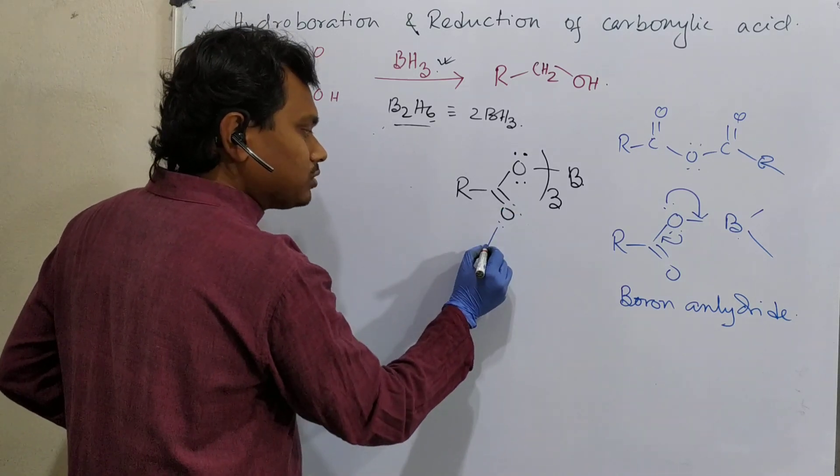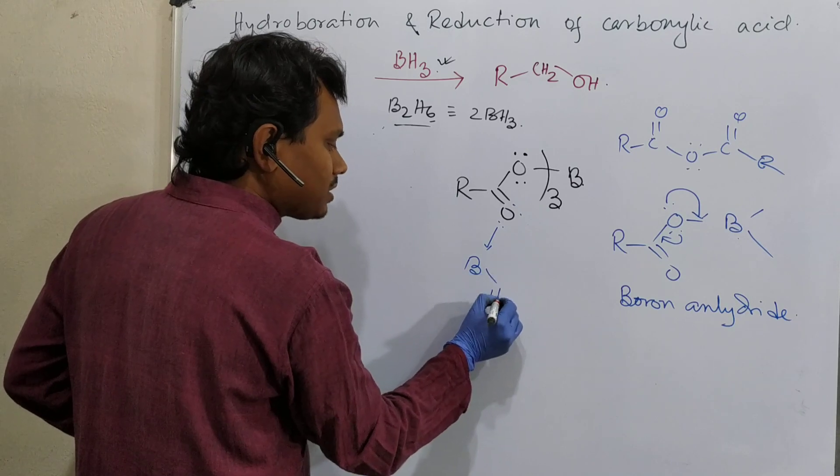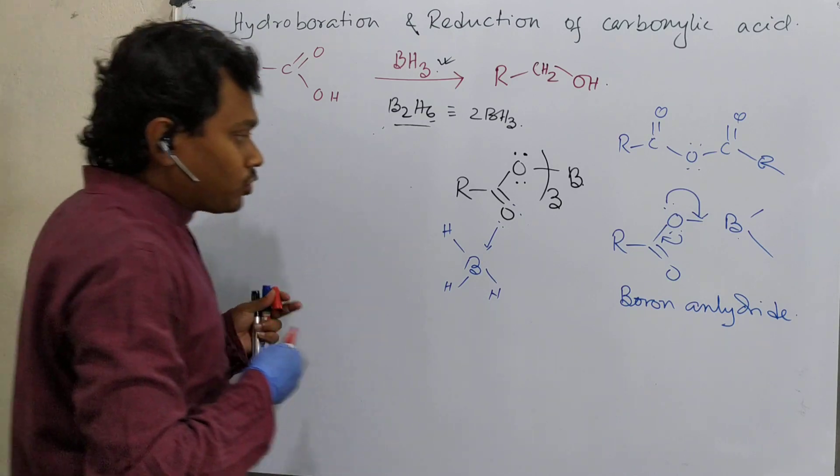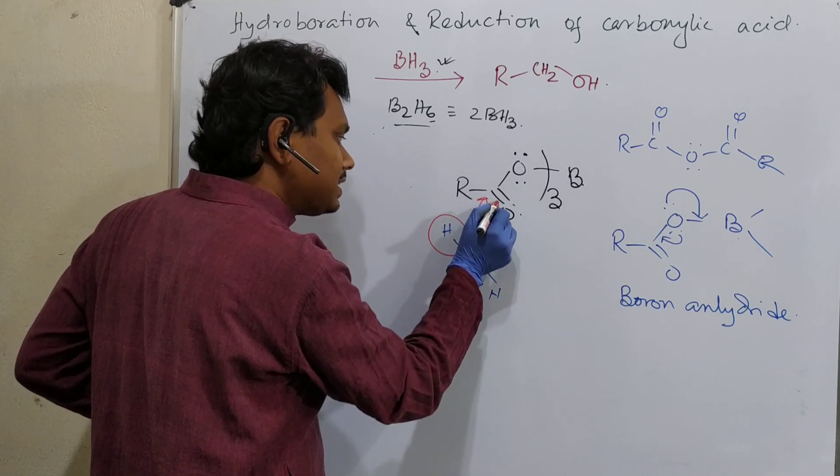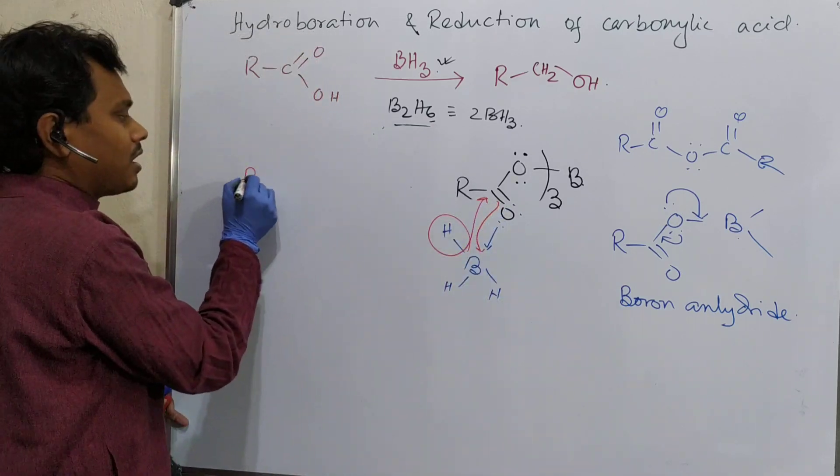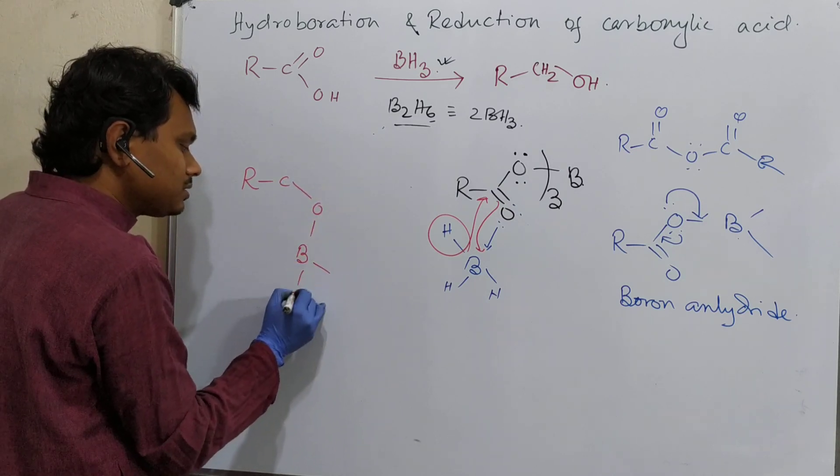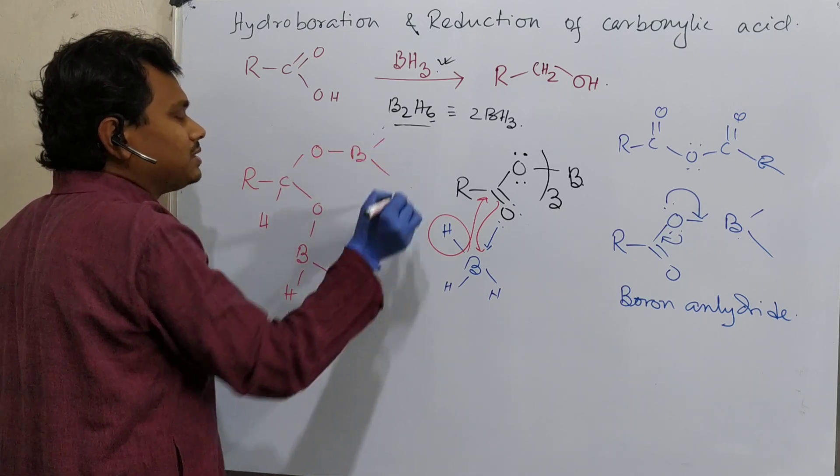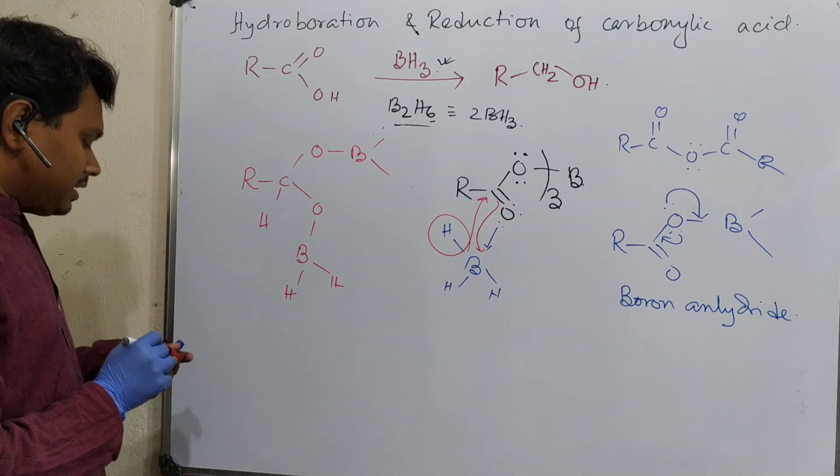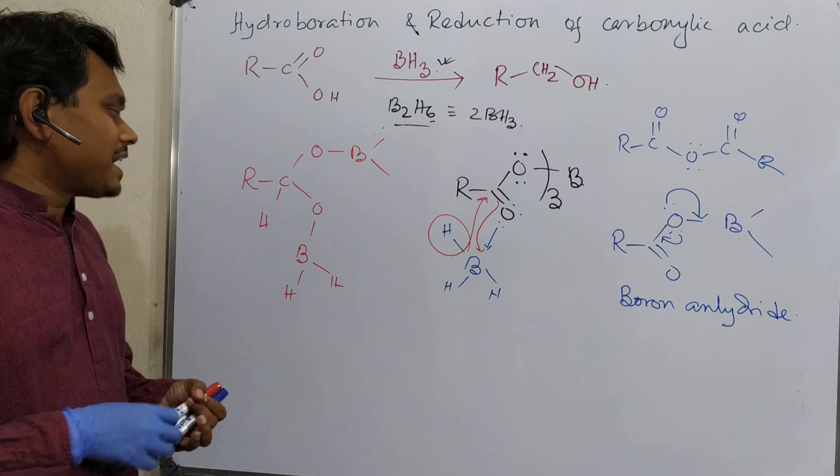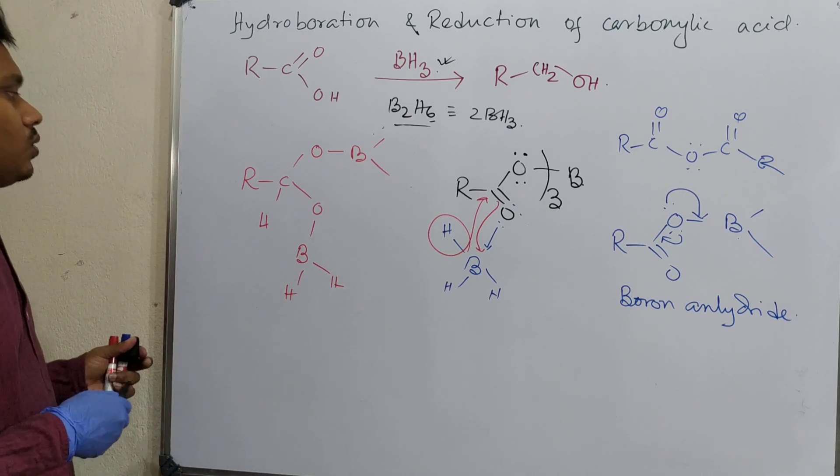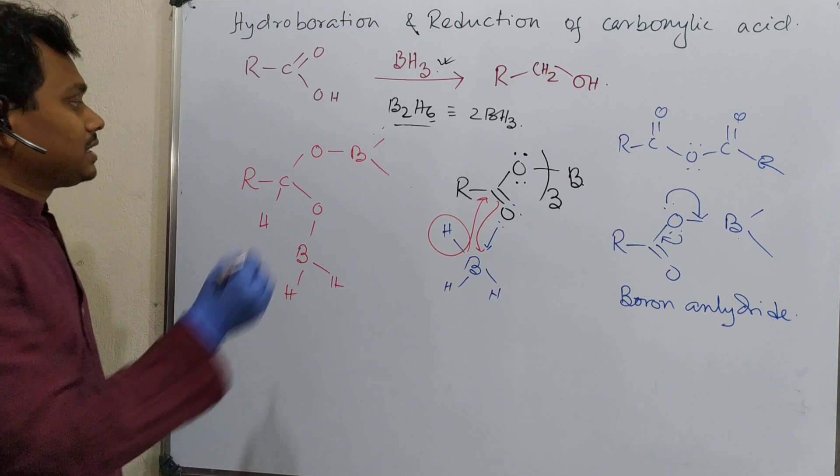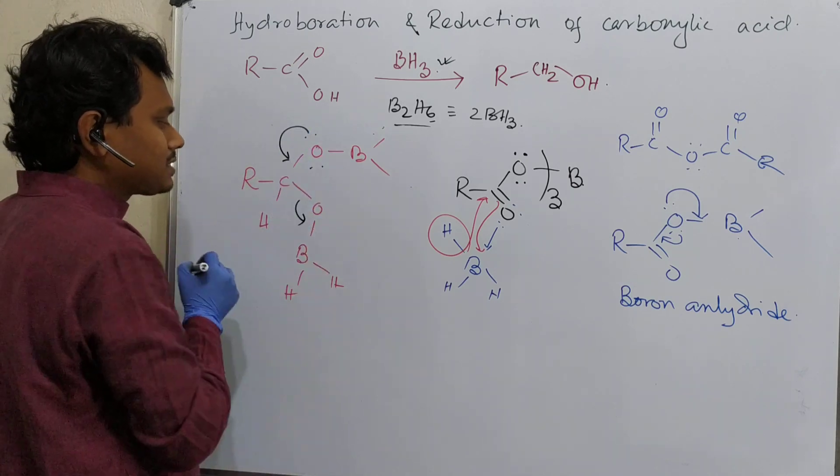In the next step, this can also coordinate to another BH3. And here, the reaction proceeds through a four member ring. You may consider that it will attack here and this will come to this. This means R-C-O-B with these other hydrogens and here one hydrogen, and here one O-B. It is nothing but a gem diol derivative, or better to say it's an anhydride. So what happens? This is broken and it forms corresponding aldehyde. This results in R-C-O-H, and aldehydes are very reactive.